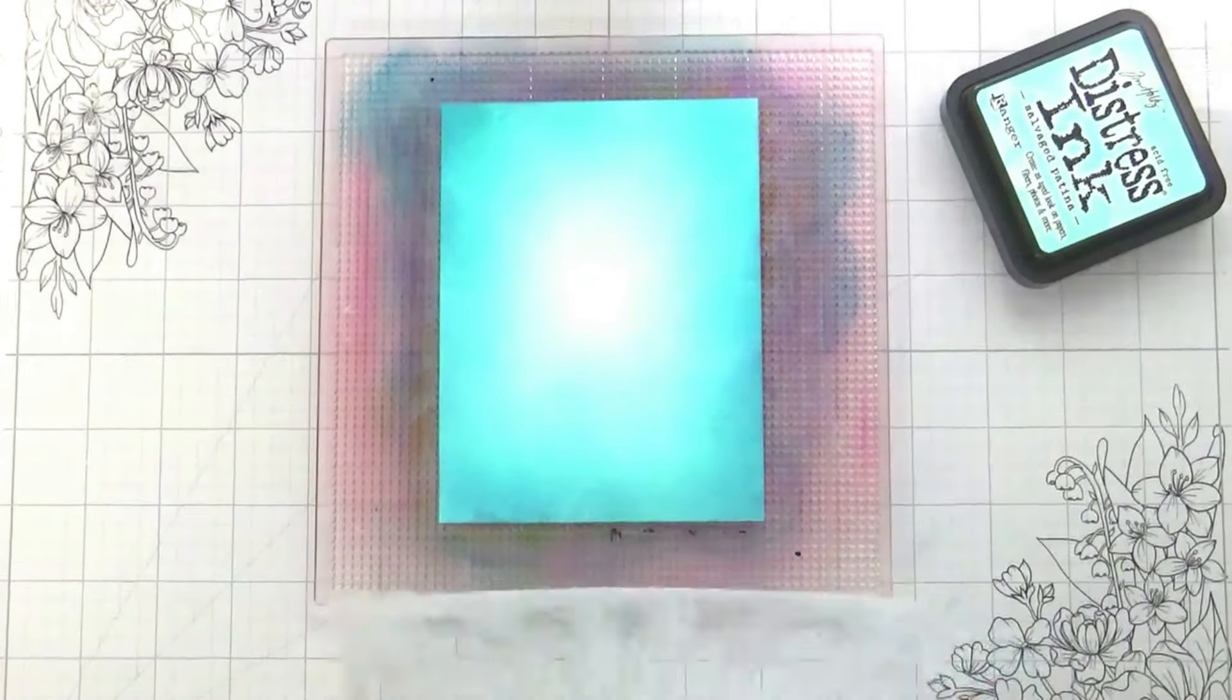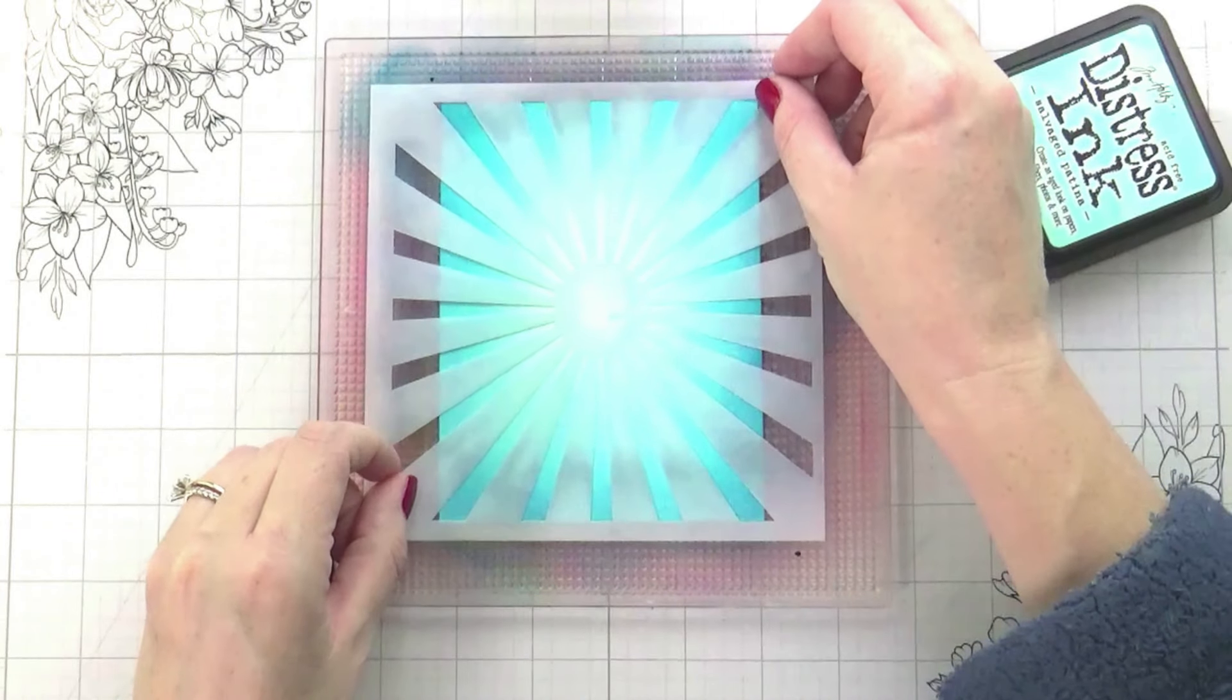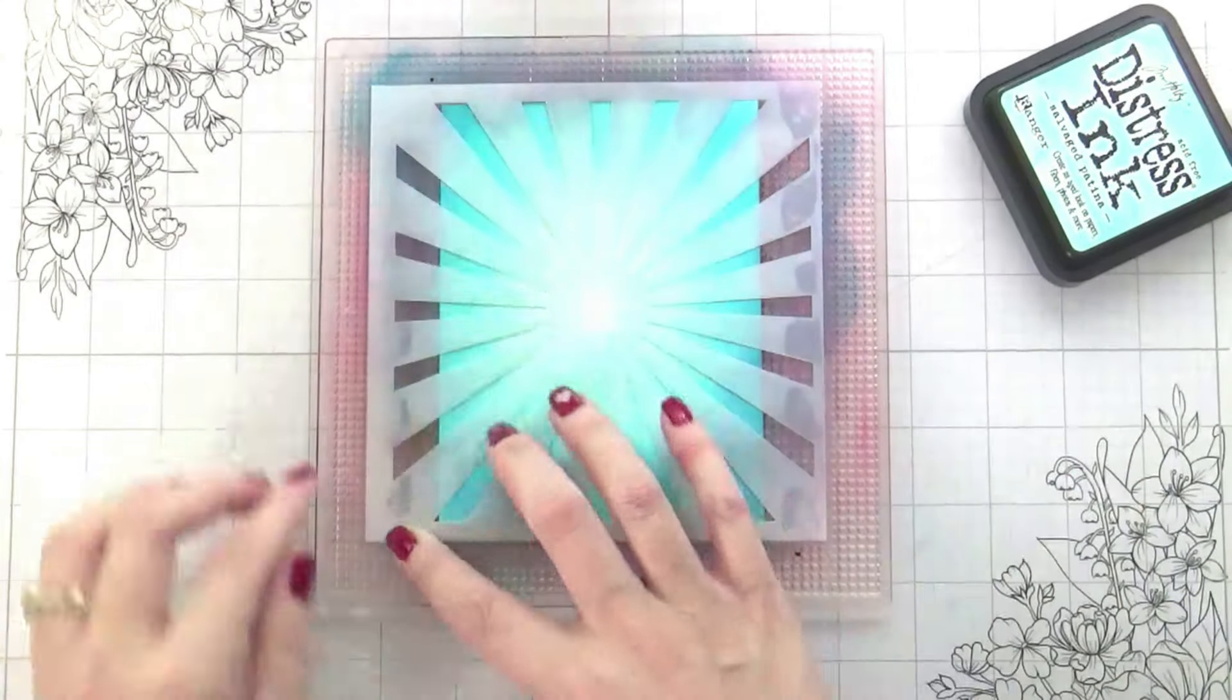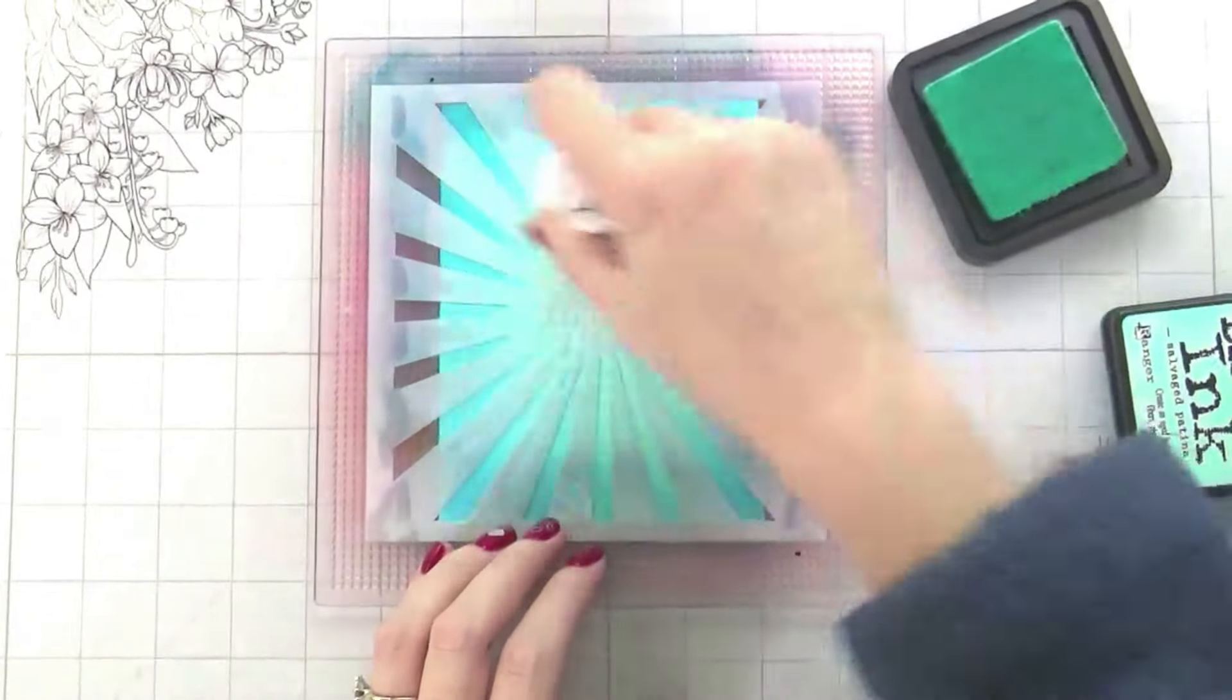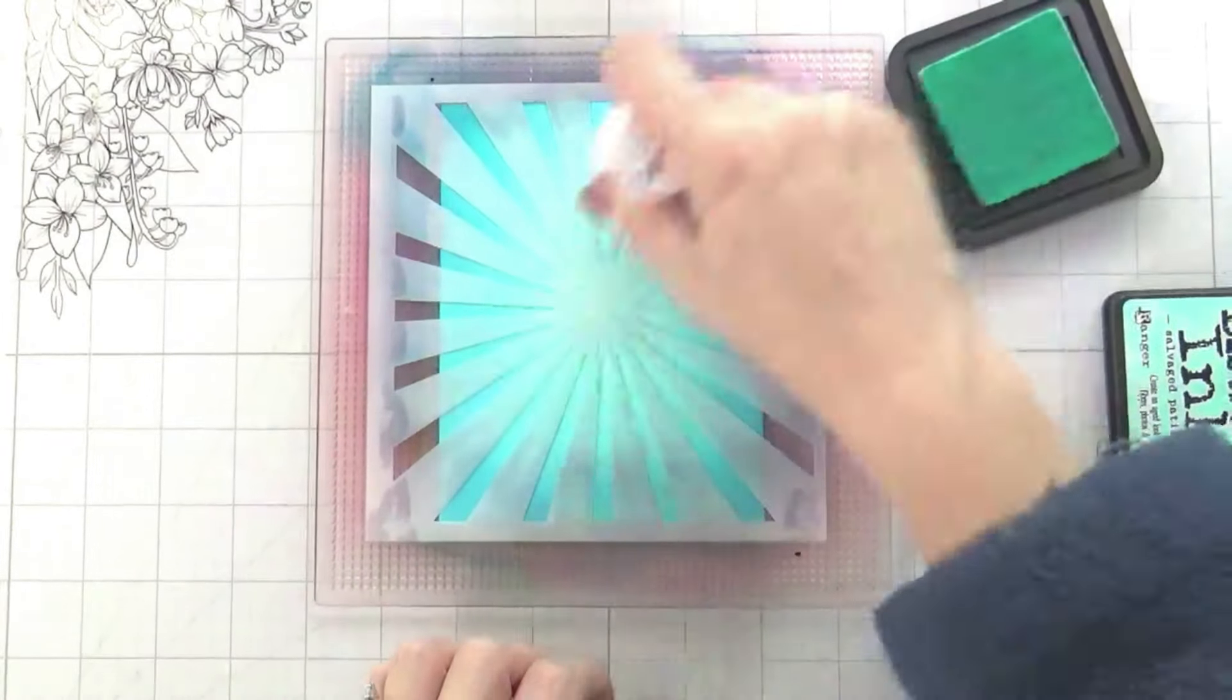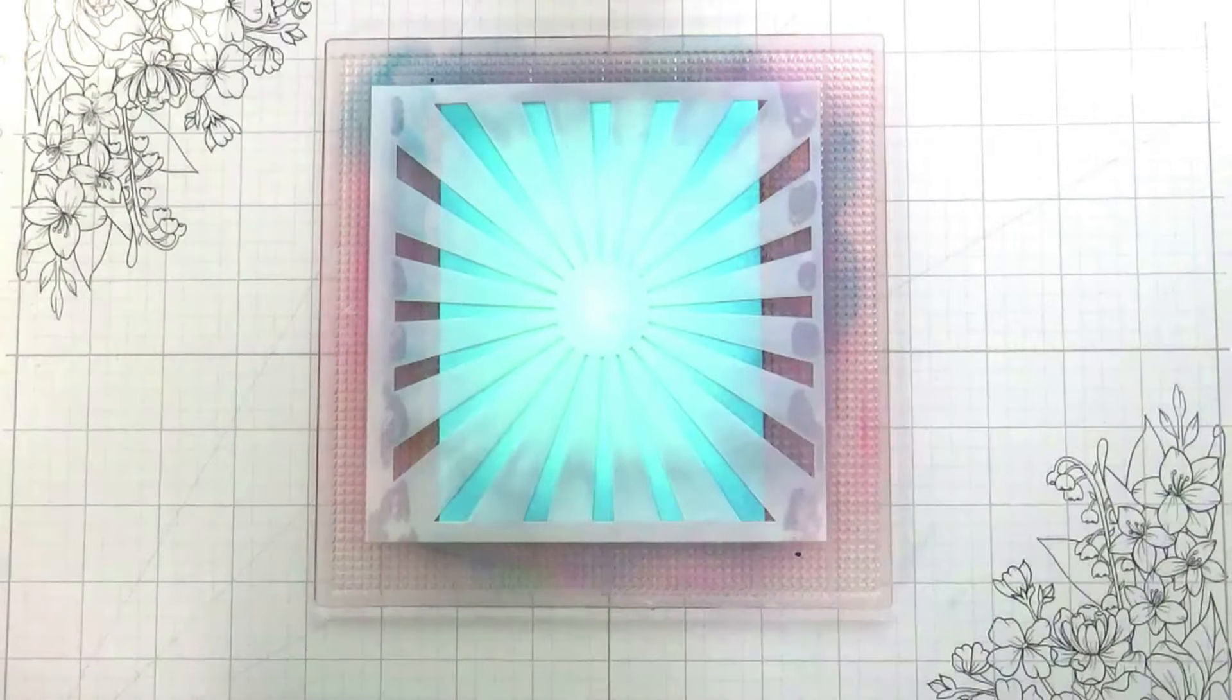Now the light bulb is the focal point, but the vast majority of background is the stencil. Speaking of the stencil, do I ever make a Trinity card where I don't use the stencil? I don't know, and I guess to me that just goes to show how good it is, how many times I go back and use it.